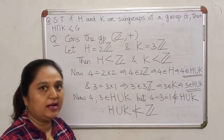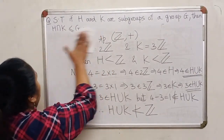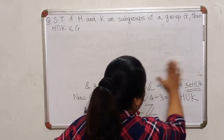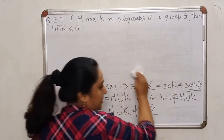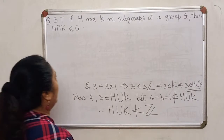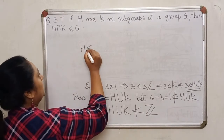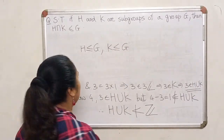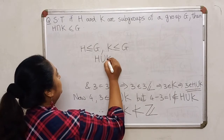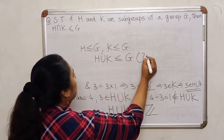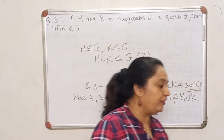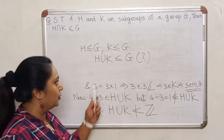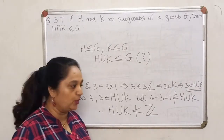So I have given you an example of a group and two subgroups of that group for which the union does not become a subgroup. In general, union of two subgroups may not always be a subgroup. However, there is one condition under which the union becomes a subgroup — look this up in standard literature or do a Google search. Suppose H is a subgroup of G and K is a subgroup of G; find out when the union will definitely be a subgroup. You will get this result in the if-and-only-if form, so that is an interesting exercise.